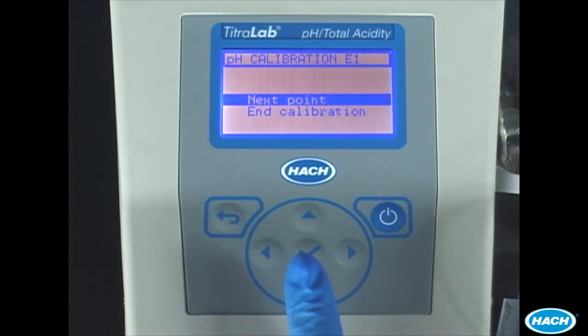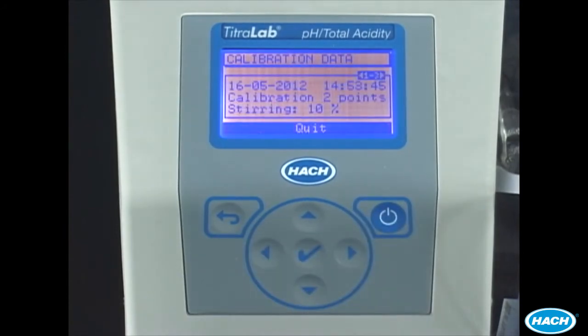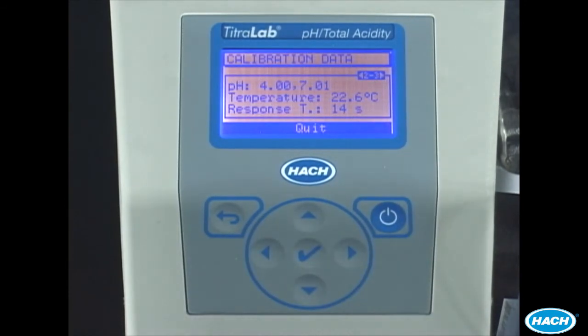Following successful calibration, select End Calibration and press the check mark to finish the calibration. The results of the calibration are stored and you can use the right arrow key to see the results of the calibration. Press the check mark to quit the calibration.